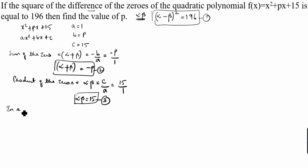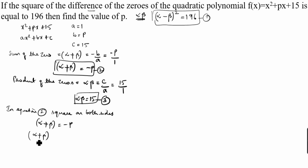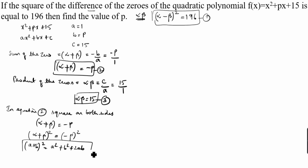In equation 2, we square both sides. Alpha + beta = −p, so (alpha + beta)² = (−p)² = p². Using the formula (a + b)² = a² + b² + 2ab, we expand: alpha² + beta² + 2·alpha·beta = p². We know alpha·beta = 15.